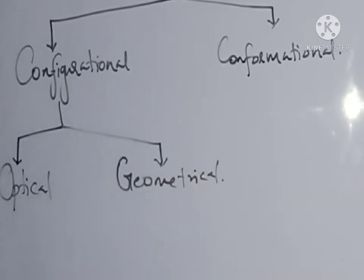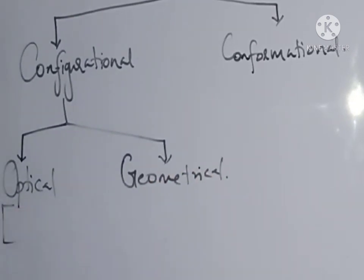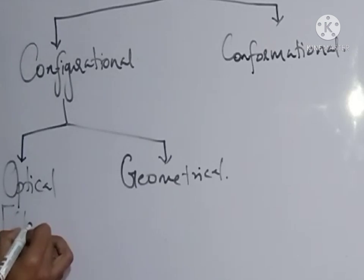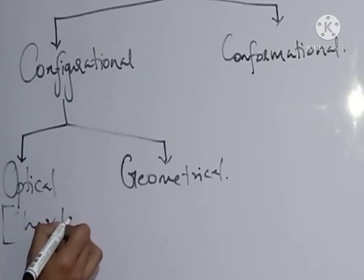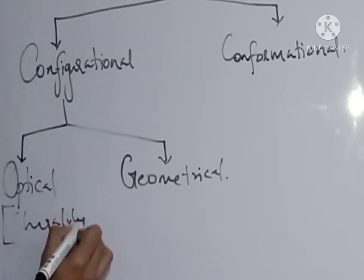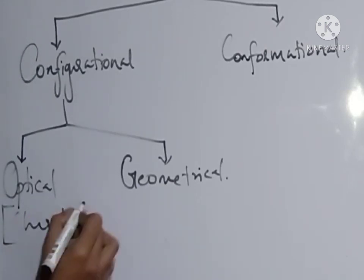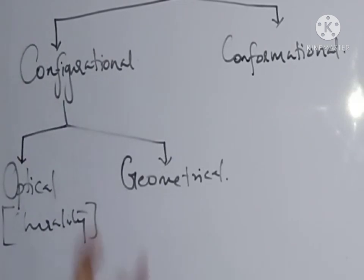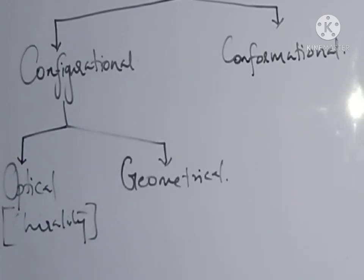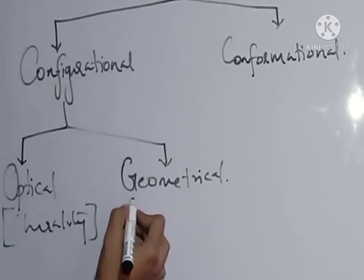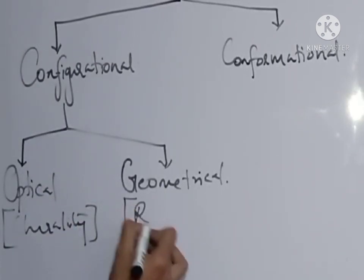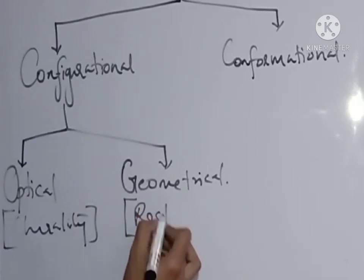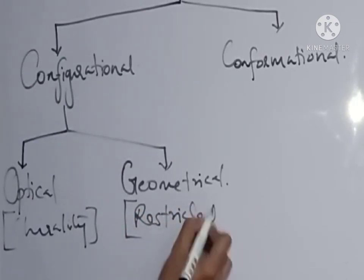The essential criteria to produce optical isomers is chirality. Geometrical isomers are obtained when restricted rotation is present.